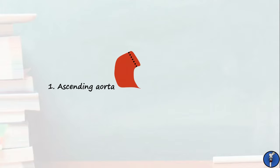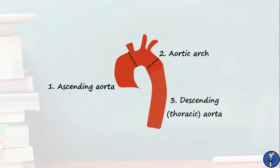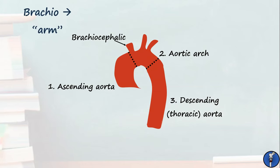The aorta can be divided into three segments. From proximal to distal, these are the ascending aorta, the aortic arch, and the descending aorta. From the aortic arch, there are three recognisable branches. The first and largest is the brachiocephalic trunk, which will later branch to supply the arm and head on the right side, and thus derives its name from brachio, meaning arm, and cephalo, meaning head.